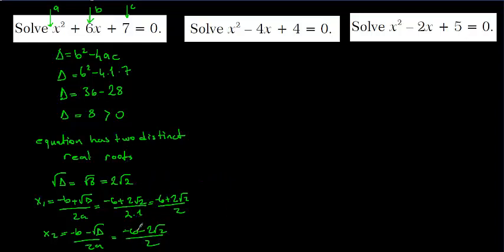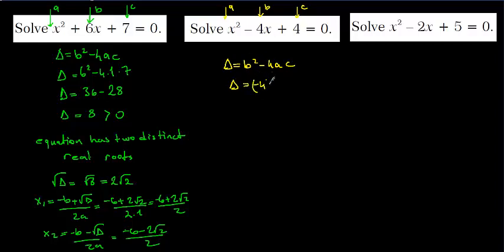Now let's check the case when delta equals 0. For the second equation, a equals 1, b equals minus 4, and c equals 4. Delta equals b squared minus 4ac: that is minus 4 squared minus 4 times 1 times 4, which equals 16 minus 16. So delta equals 0.